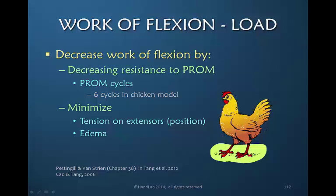In a chicken model, six cycles were required to significantly reduce the resistance to passive motion, which then reduces the resistance to active motion. In addition to passive range of motion, there are other ways we can minimize the amount of resistance created and thus decrease the load required.